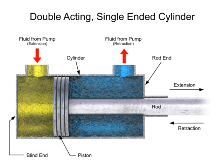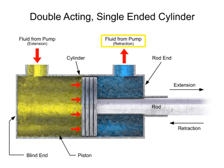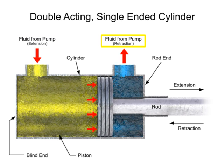A directional control valve sends fluid through the blind end port, while venting fluid out the rod end port back to the tank. Pressure builds up and generates a force on the piston, causing the extension stroke.